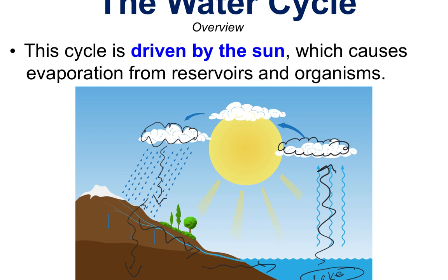Plants also contribute — when the sun comes out in the morning, plants will start to transpire and drive the water cycle. They release water that they've pulled up through their root system at night, and release it into the atmosphere as a gaseous phase of water.